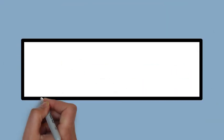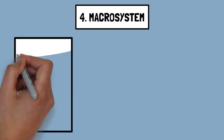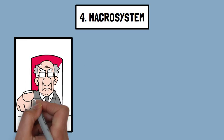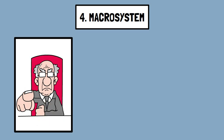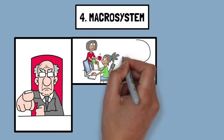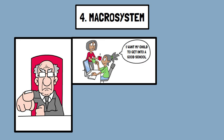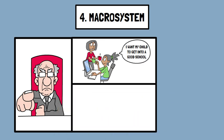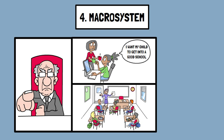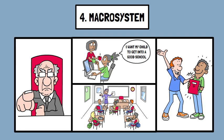Number four: Macrosystem. This layer encompasses broader societal and cultural influences such as laws, cultural values, and economic conditions. Societal attitudes towards education or child-rearing practices can shape how children are raised and educated. If a society values education highly and invests in educational resources, children in that society are more likely to have better educational opportunities and support.